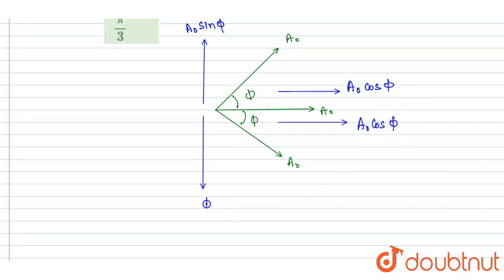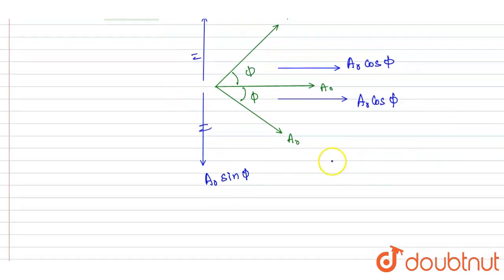The A₀ sin φ components will get cancelled, and now you can see the three horizontal components are in same direction, right? So I will write A₀ + 2A₀ cos φ equals 2A₀, since we know that the resultant is 2A₀.